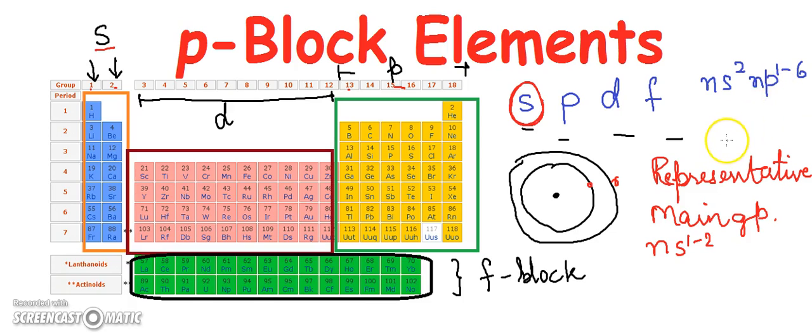The properties of the S and P block elements follow systematic gradation in the properties, both along the periods and along the groups. So there is a specific trend for the properties for the elements present in the periodic table.